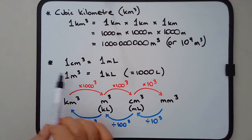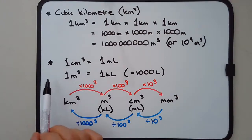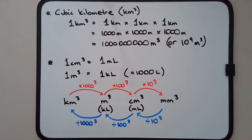Capacity is related to volume: volume describes how much space an object itself takes up, while capacity describes what a three-dimensional object can contain. They're equivalent concepts but used in different contexts, so we need to be careful about which units we use.